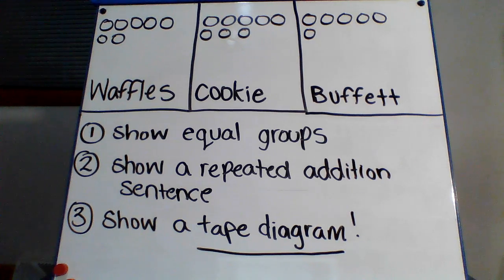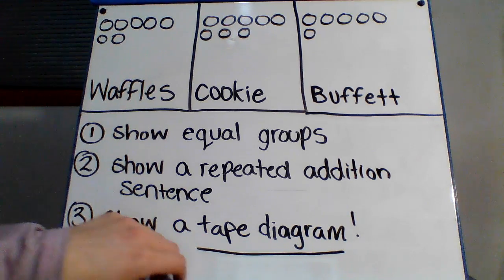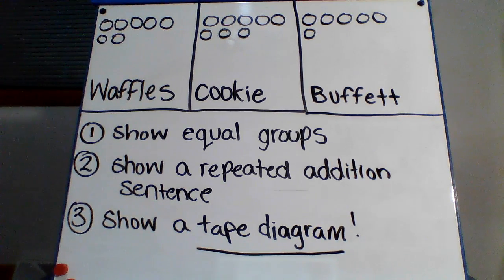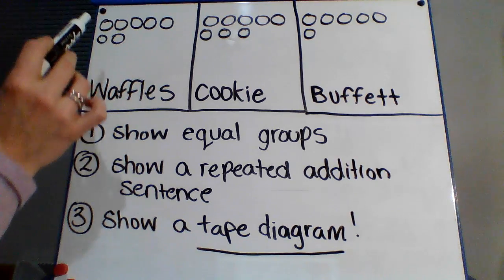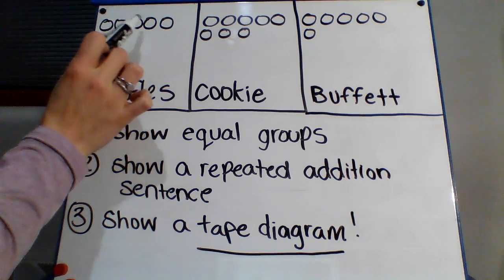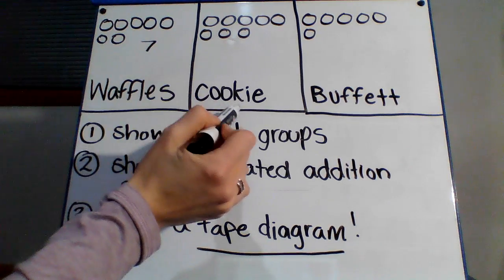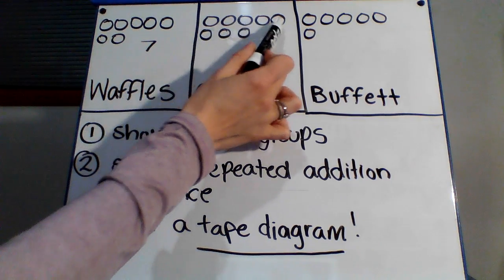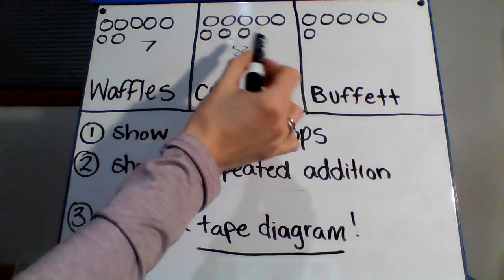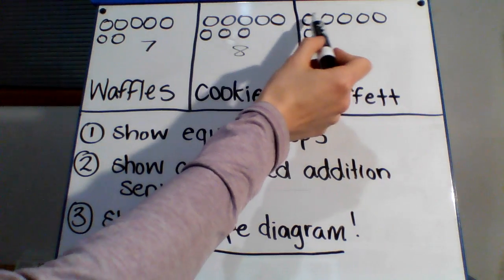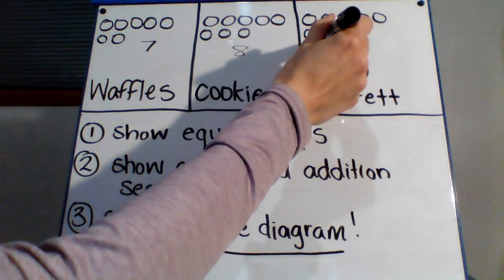Now, they all have treats. And I will quickly write them with you. So we have Waffles having one, two, three, four, five, six, seven treats. Cookie has one, two, three, four, five, six, seven, eight treats. And Buffett has one, two, three, four, five, six treats.